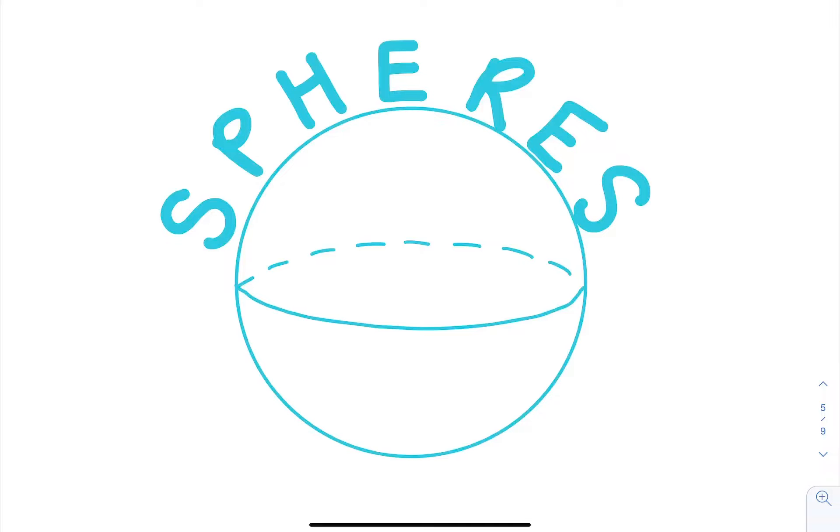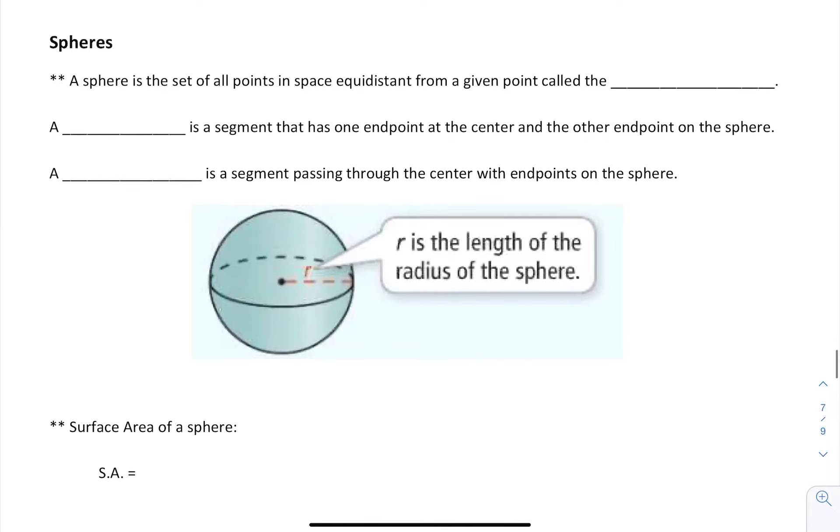In this video we're going to be learning about how to find the surface area and volume of spheres. To start off, a sphere is the set of all points in space equidistant, or the same distance, from a given point called the center.